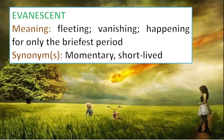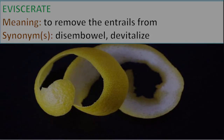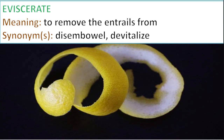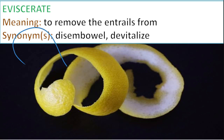Next, evanescent is something that is really short-lived or momentary — a fleeting, vanishing thing happening only for a very brief moment, like a beautiful sunset or a beautiful dream right before your alarm clock goes off. All these things can be described as evanescent, something very temporary. The last word is eviscerate — to eviscerate means to remove the insides or the entrails of a creature. On Discovery Channel you can probably watch a vulture eviscerate something. The synonyms are disembowel and devitalize. Eviscerate can also be used when you deprive something of its most important quality.